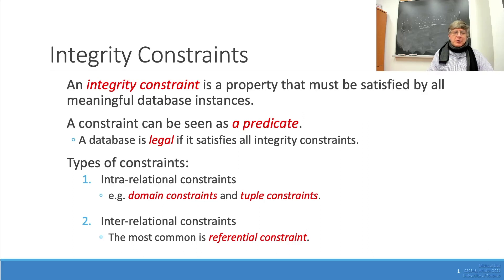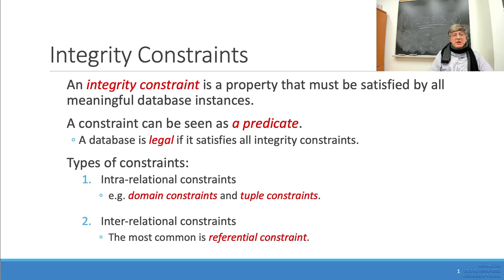We distinguish two categories of integrity constraints: intra-relational constraints and inter-relational constraints. For instance, consider a relation where one attribute is an integer and the other attribute is the square of that integer — the tuple constraint would be that the second attribute must be the mathematical square of the first attribute.